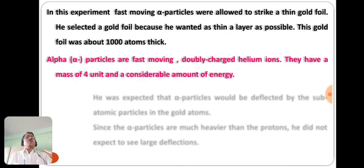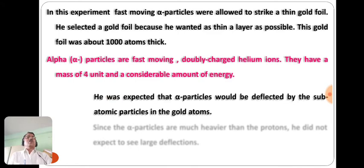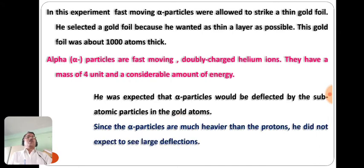The alpha particles are fast-moving, doubly charged helium ions with a mass of 4 units and considerable energy. Rutherford expected that alpha particles would be deflected by subatomic particles in the gold atoms. Since alpha particles are much heavier than protons, he did not expect to see large deflections.